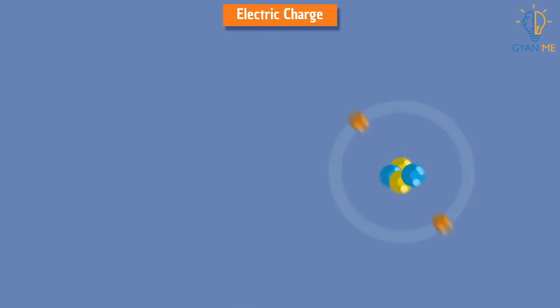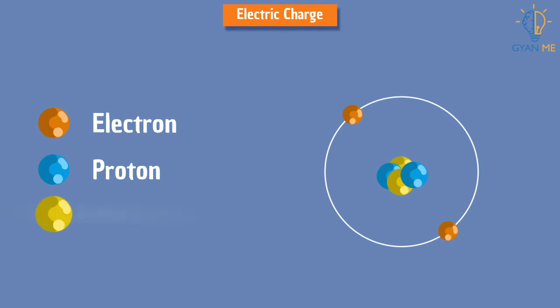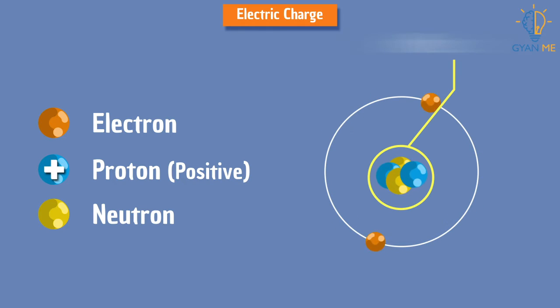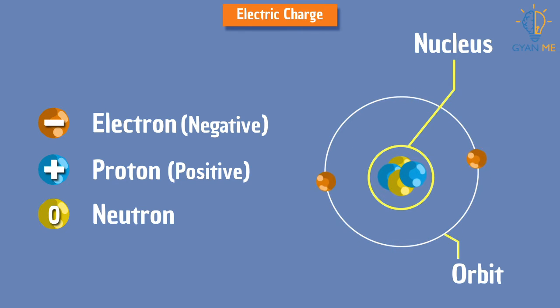All matter is made up of atoms, which in turn are made up of elementary particles called electrons, protons, and neutrons. Protons have positive charge and are present in the nucleus. Electrons have negative charge and are present around the nucleus in orbits. Neutrons have zero charge and are neutral. Neutrons are present in the nucleus along with protons.